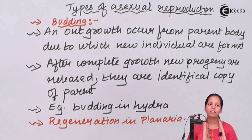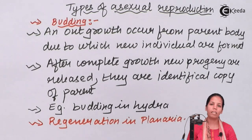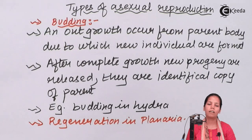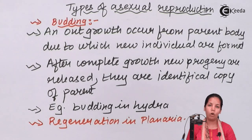So students, in this part of the chapter we came across the types of Asexual Reproduction. I hope all students are very clear with this concept.